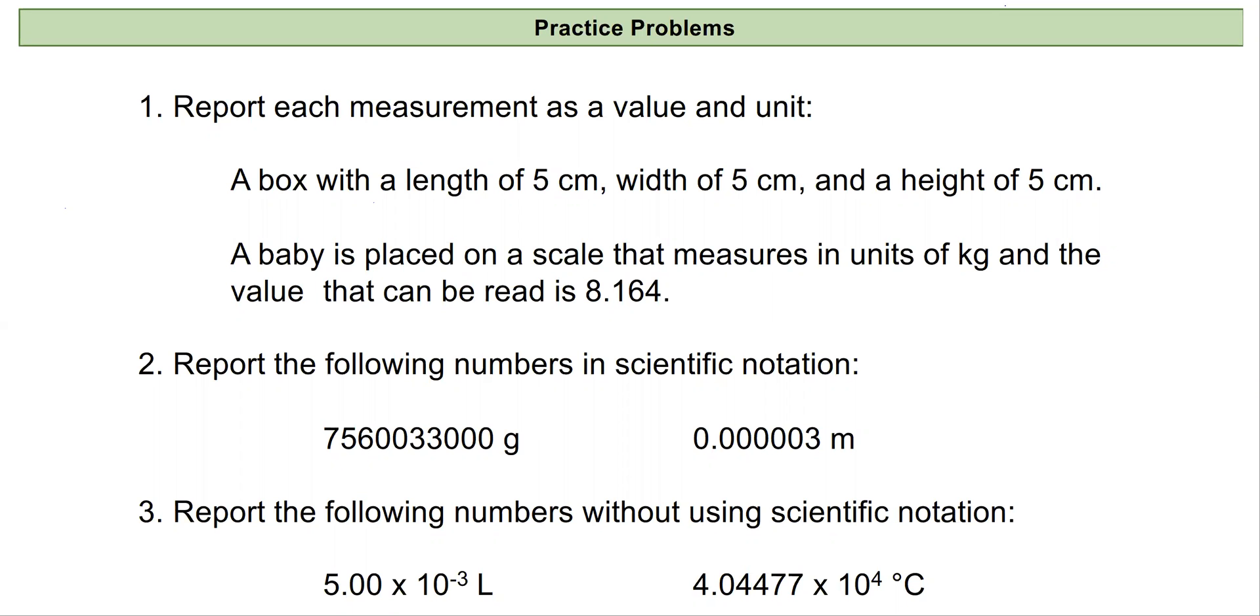This is an exercise in making sure that we report both a numeric value and the unit associated with it. For our first one we're given a width, height, and length of five centimeters for a box. If you remember, volume is equal to length times width times height, so that means that the volume of this box is going to be equal to five centimeters times five centimeters times five centimeters.